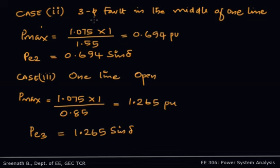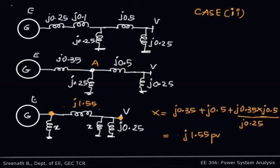For Case 2, when there is a three-phase fault in the middle of one of the lines, the equation is again EV/X · sin δ. The key is finding the new value of X. In Case 2, with a fault in the middle of one line, we get X = 1.55. Let's see how.